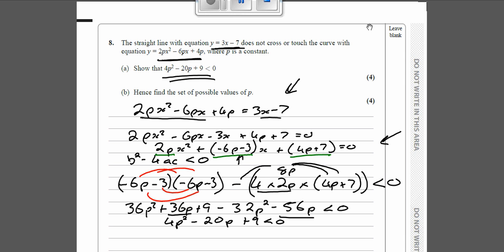Now in respect of that, they've said for part b 'hence', so if they say hence it means that you've used whatever you've just done in part a. So we've got our answer here, and we've got to find the set values for p so that 4p² - 20p + 9 is less than 0.